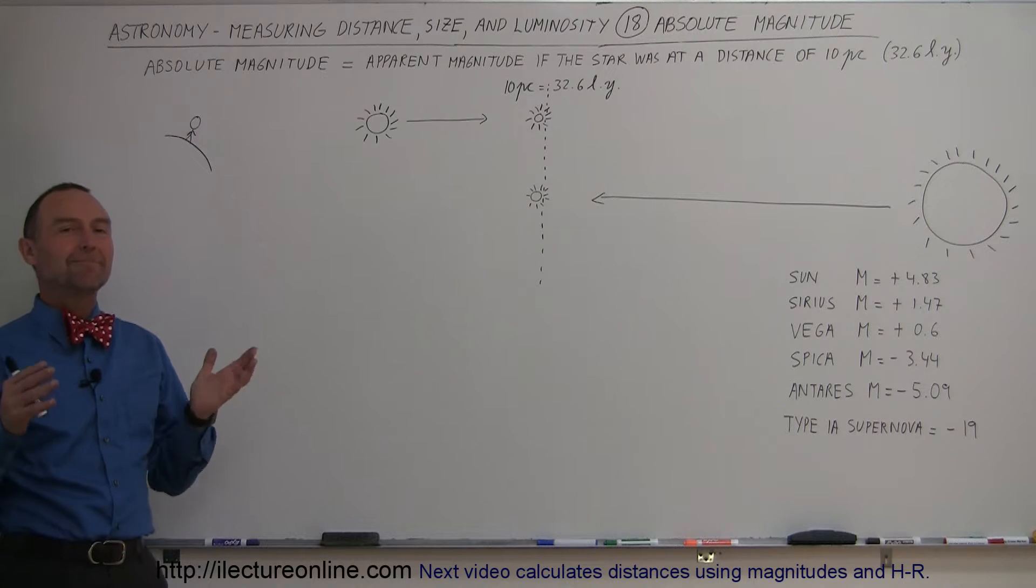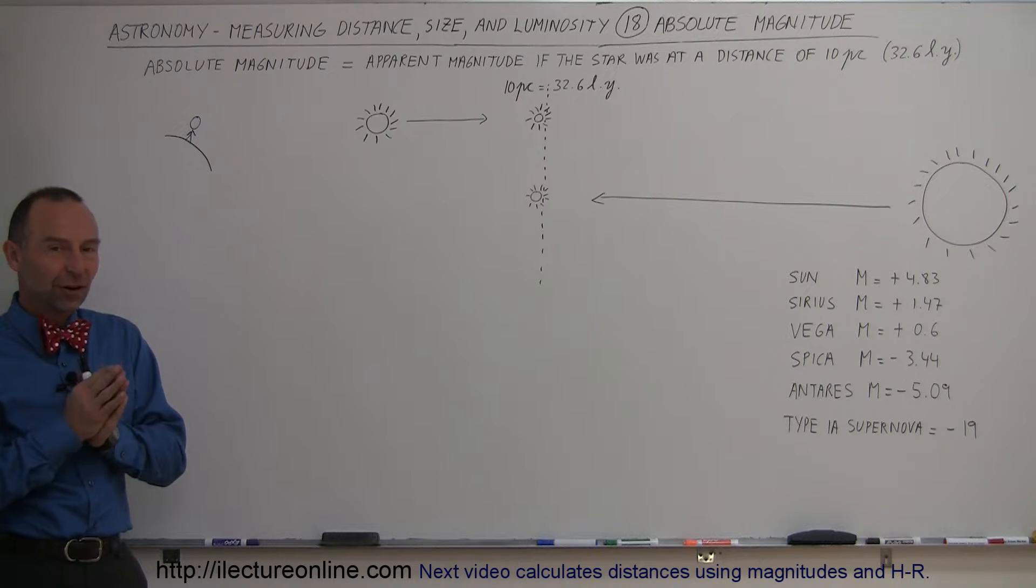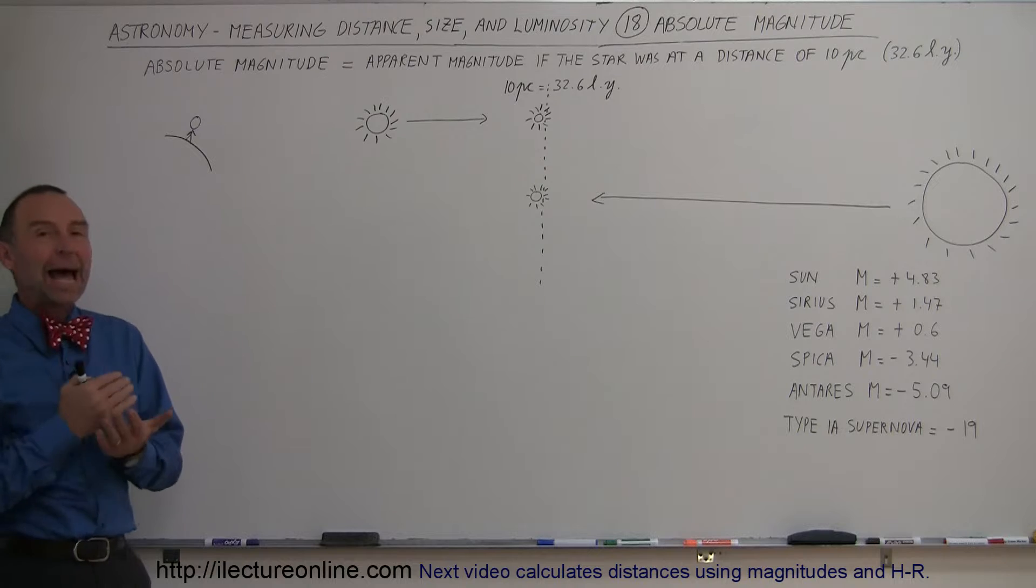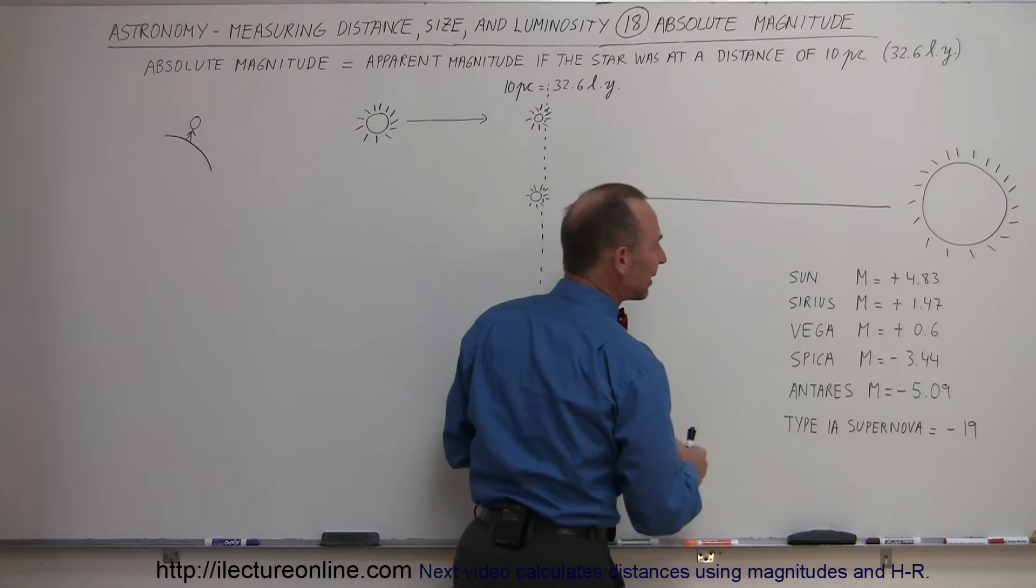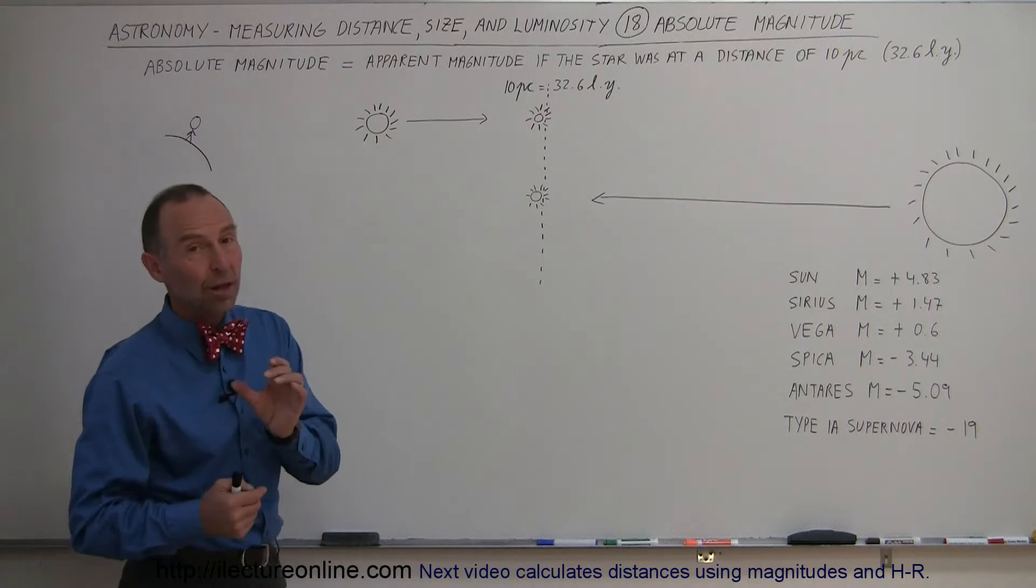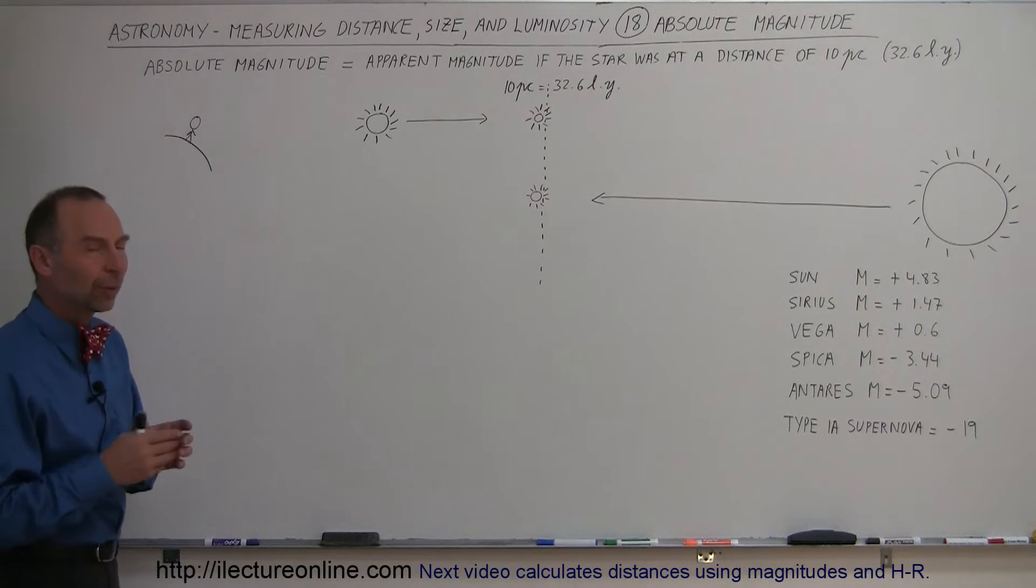The second piece of the puzzle to understand magnitudes and brightness of stars is the term absolute magnitude. Notice we use the capital letter M to indicate absolute magnitude, small m for apparent magnitude.